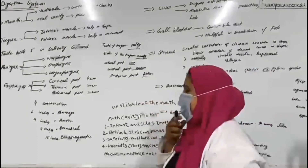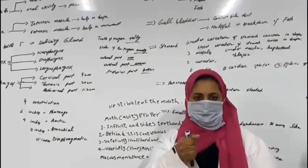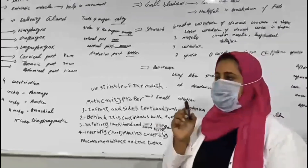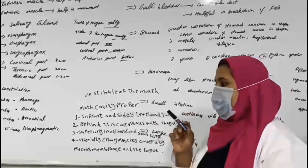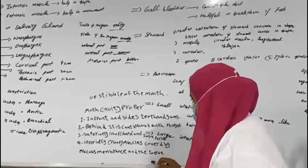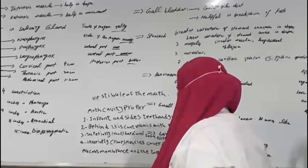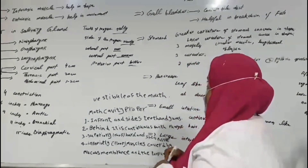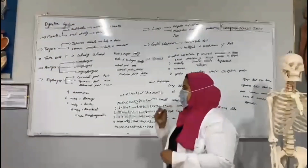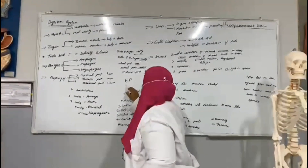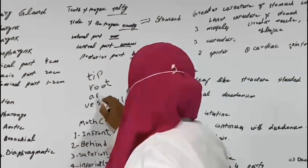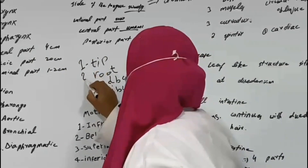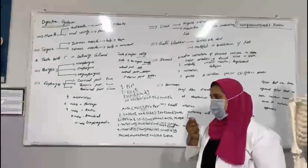The contents of the mouth cavity include the teeth and gums, and the salivary glands. There are two sets of teeth: primary teeth, which are 20 in number, and secondary teeth, which are 32. The tongue is a muscular organ covered by bone and mucous membrane. A tooth has three parts: crown, neck, and root.